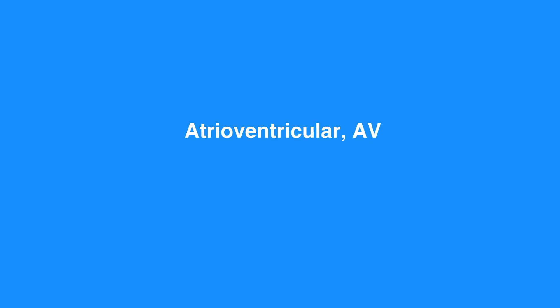After pausing briefly, the electrical impulse moves to the HIS-Purkinje system, which acts as wiring to conduct the electrical signal into the left and right ventricles. This electrical signal causes the heart muscle to contract and pump blood.